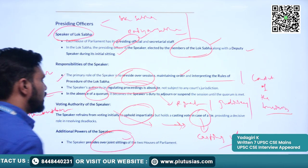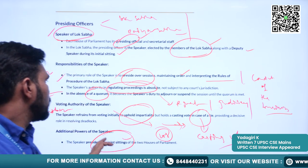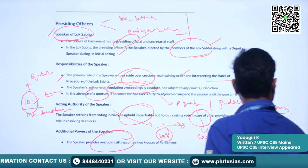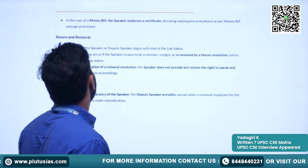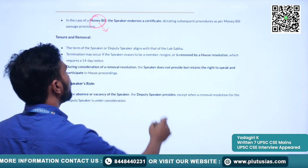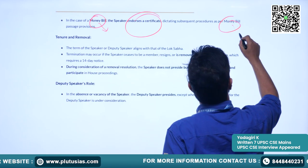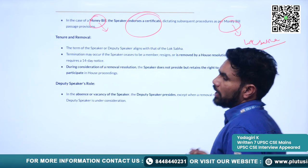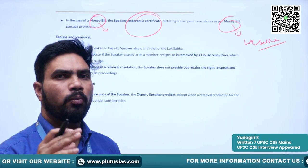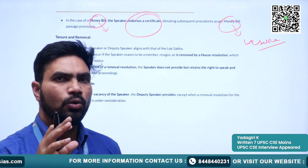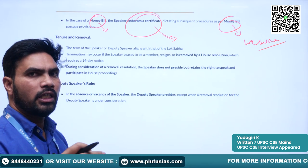Another power of the speaker is that he presides over joint sittings of the houses according to Article 108. The joint sitting will be called by the president whenever there is a disagreement between the two houses about an ordinary bill. In the case of money bills, the speaker has very specialized powers — he endorses a certificate certifying that particular bill as a money bill. The Lok Sabha has specialized powers and the Rajya Sabha has limited powers when it comes to money bills. The authority for certifying a bill as a money bill lies with the speaker of the Lok Sabha.